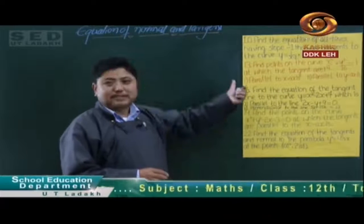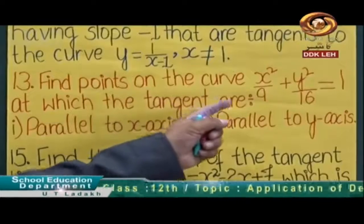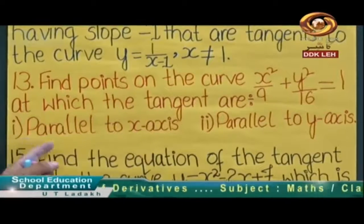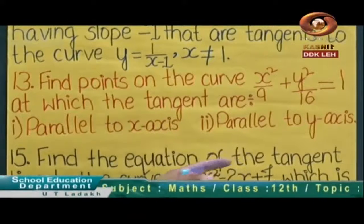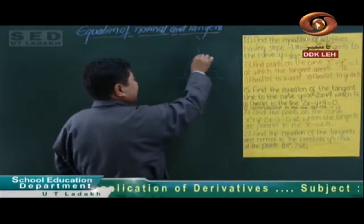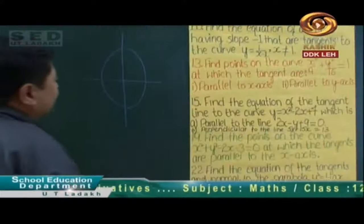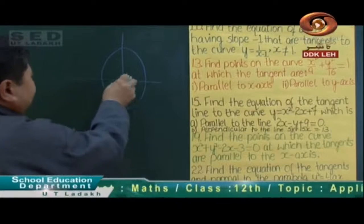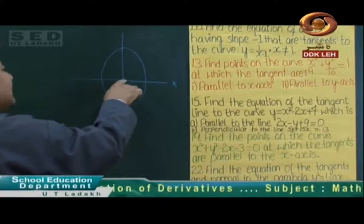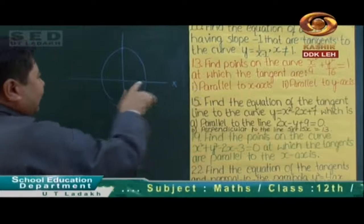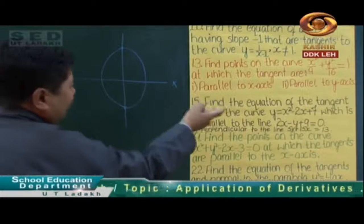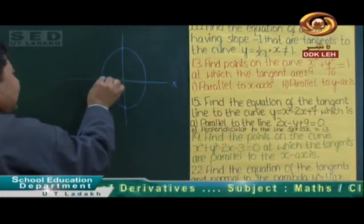Let's go to question number 13: find points on the curve x squared upon 9 plus y squared upon 16 equals 1 at which the tangents are parallel to the x-axis and parallel to the y-axis. This curve is an ellipse. For part one, we find points where the tangent is parallel to the x-axis, and for part two, parallel to the y-axis.